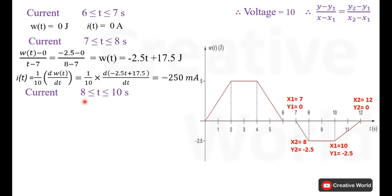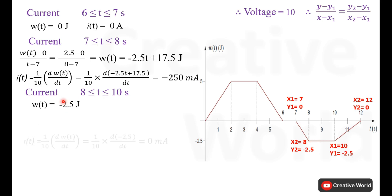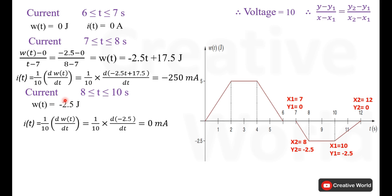For the current value between time interval 8 and 10 seconds, energy is constant at −2.5 joules. Since the derivative of a constant is 0, the current will be 0 milliamperes.